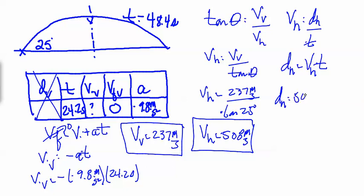Horizontal displacement is 508 meters per second times the time of the total time in this case, because we're going from beginning to end, is 48.4 seconds, and then the horizontal displacement is equal to 2.46 times 10 to the 4 meters.